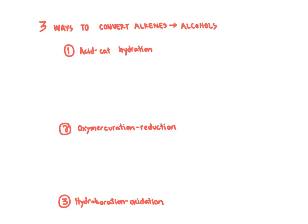We learned three different ways to go about doing this. Our three approaches for converting alkenes into alcohol products that we've talked about previously are: one, acid catalyzed hydration; two, oxymercuration reduction; and three, the reaction we call hydroboration oxidation of an alkene.